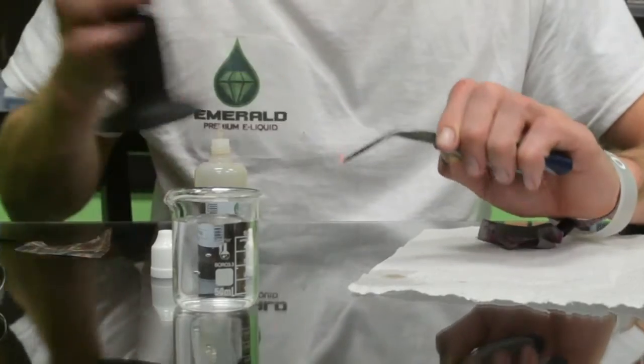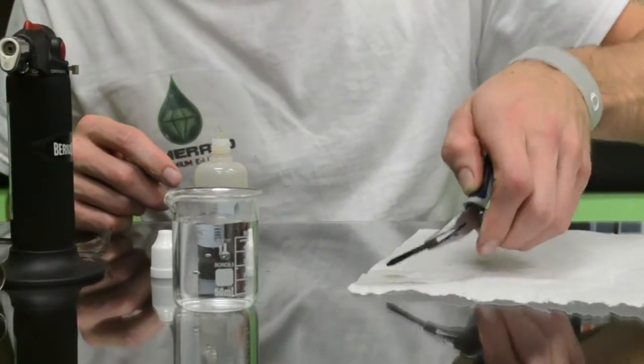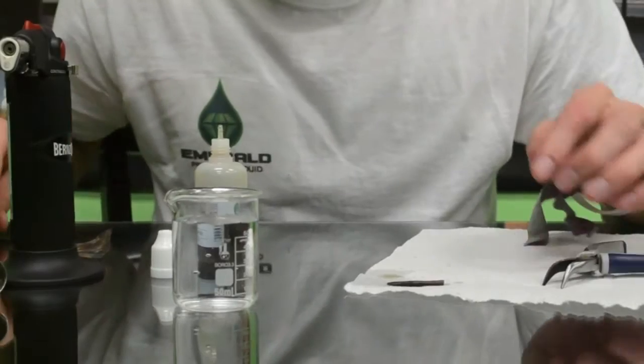Once you burn the liquid into the wick, you dip it again, and then you repeat that process about three times.